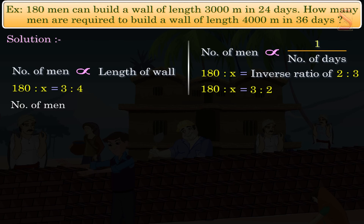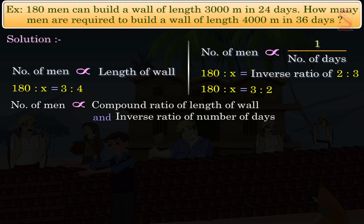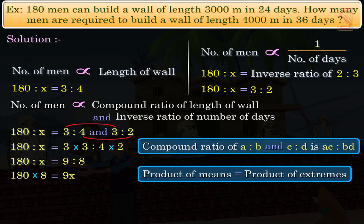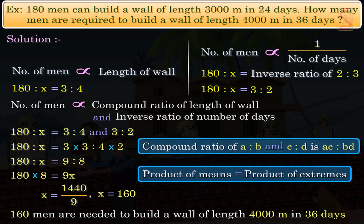Now, we have the number of men to be directly proportional to length and inversely proportional to number of days. So, we get 180 is to x equal to the compound ratio of 3 is to 4 and 3 is to 2, which gives 180 is to x equal to 3 into 3 is to 4 into 2. Solving, we get x equal to 160. Hence, 160 men are needed to build a wall of length 4000 meters in 36 days.